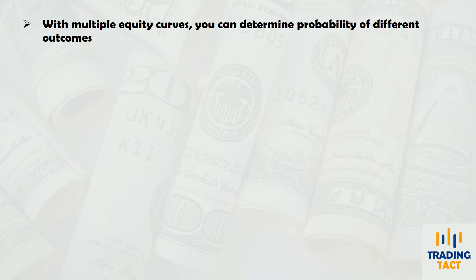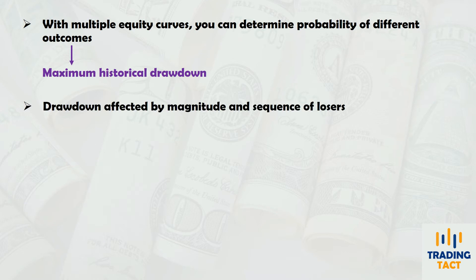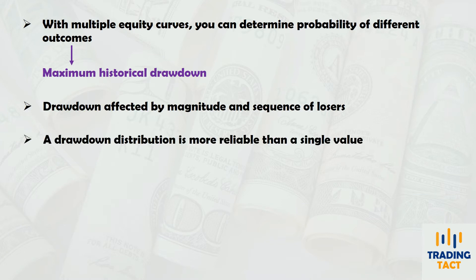In particular, traders are interested in worst-case drawdowns. Since drawdown is affected by the sequence, not just the magnitude, of losing trades, these multiple equity curves can be used to produce a drawdown distribution that is more reliable than a single drawdown value. Before we go into more detail about these distributions, a brief explanation of confidence levels is required.